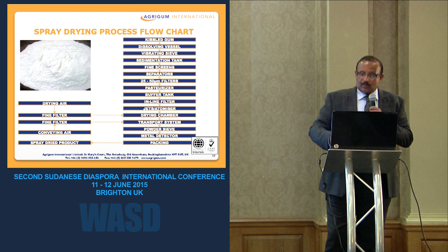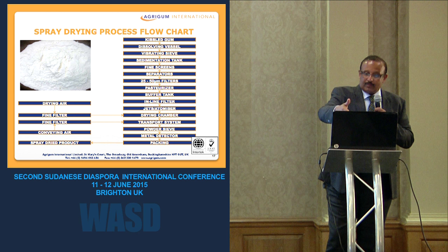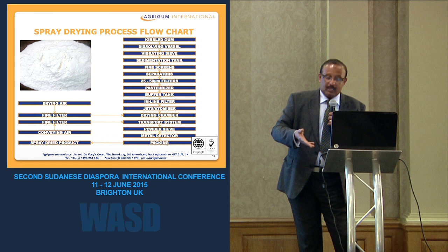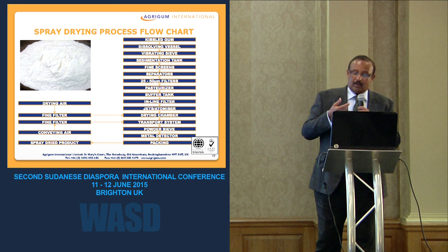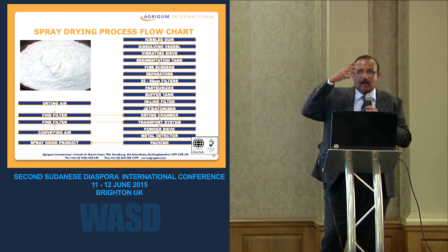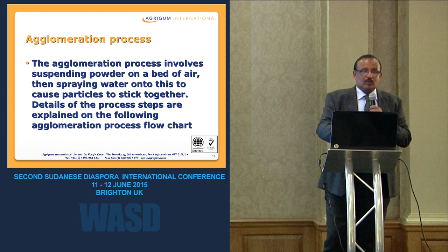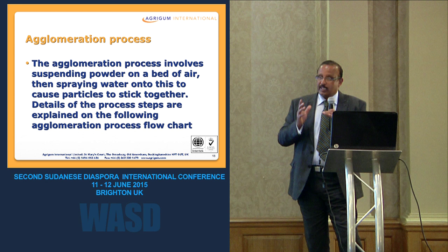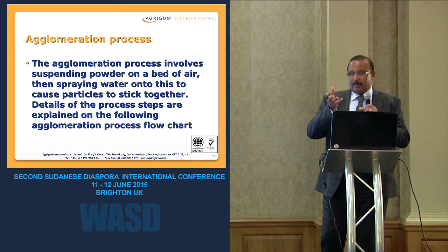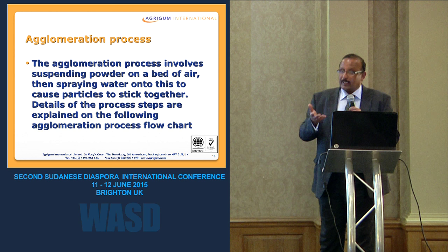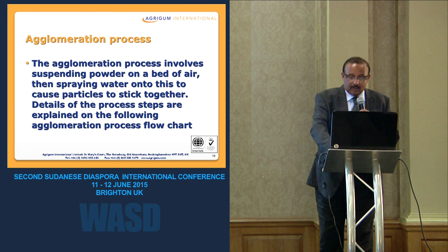Spray-drying also purifies the gum. You dissolve the gum and filter it through different filtration stages — sieves, filters, and centrifugation — which removes heavy fine materials, followed by ultrafine filters to remove light fine impurities. The gum liquid is then pumped into a drying chamber where heat evaporates the water, producing spray-dried powder. Agglomeration follows by spraying water onto the spray-dried gum to stick particles together, producing a less dusty, faster-dissolving, environmentally friendly product.